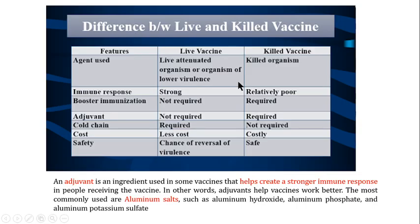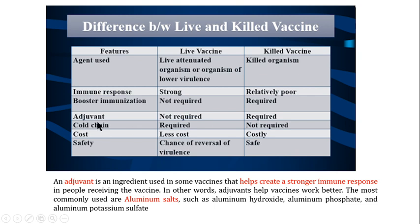Comparing live and killed vaccines, this table provides a quick overview. The agent in live vaccines is a live attenuated organism of lower virulence, whereas in killed vaccines the organism is killed. The immune response from live vaccines is stronger, while it is relatively poor in killed vaccines. Booster immunization is not required for live vaccines but is required for killed vaccines. Adjuvants are not required in live vaccines but are required in killed vaccines.